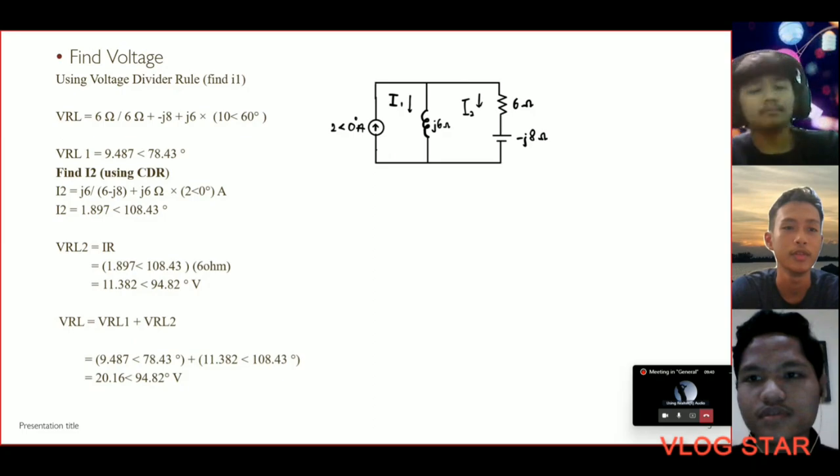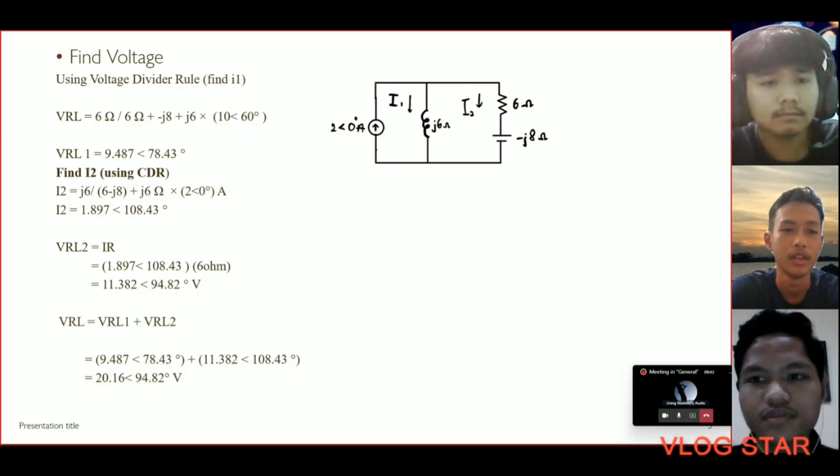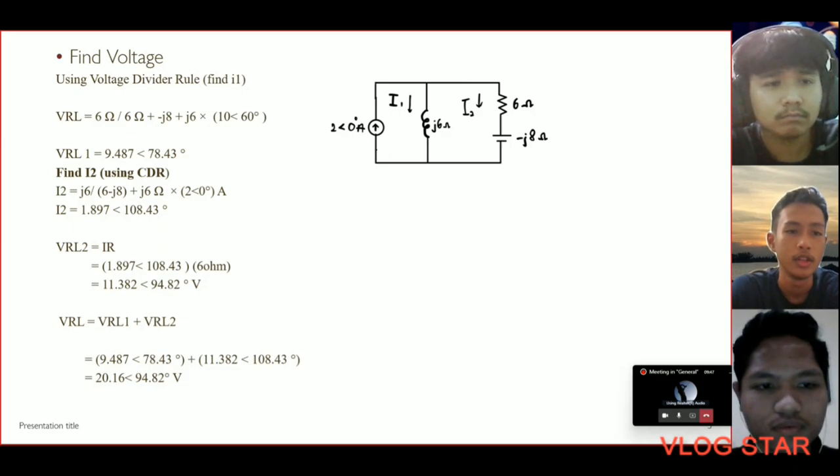To find VRL, we're using the voltage divider rule. Second, to find I2, we use the current divider rule.